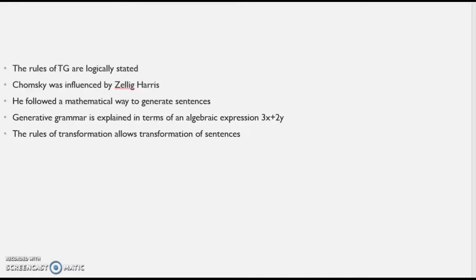Chomsky wanted to bring logic and coherence into his findings and principles. He followed a mathematical approach in generating sentences and in bringing about transformational generative grammar. He also took into account the psychological processes that account for the use of language and constructed his models based on these psychological processes.